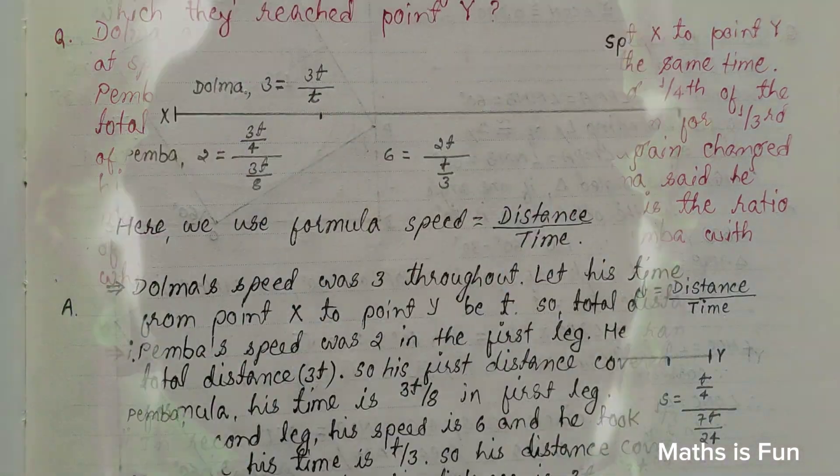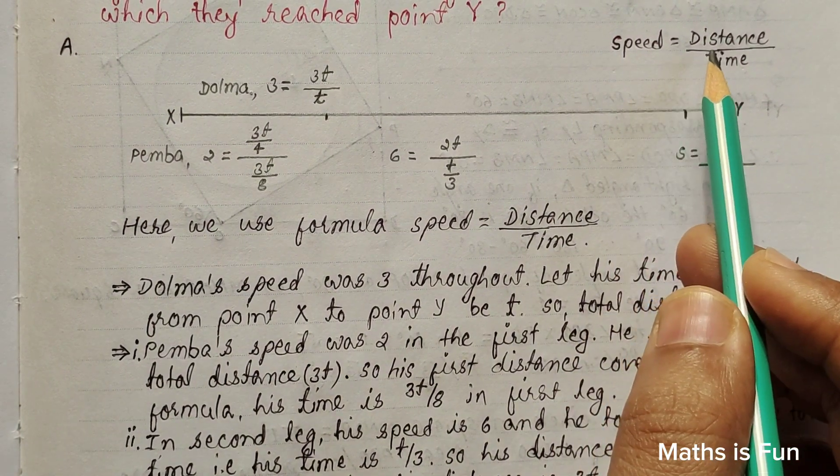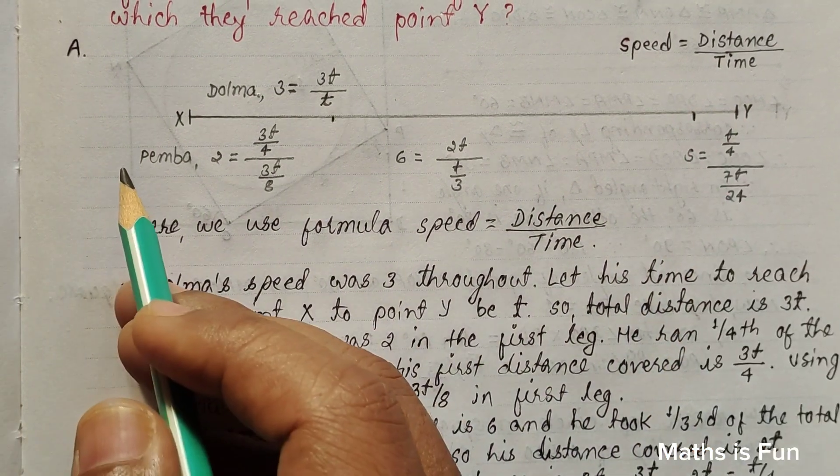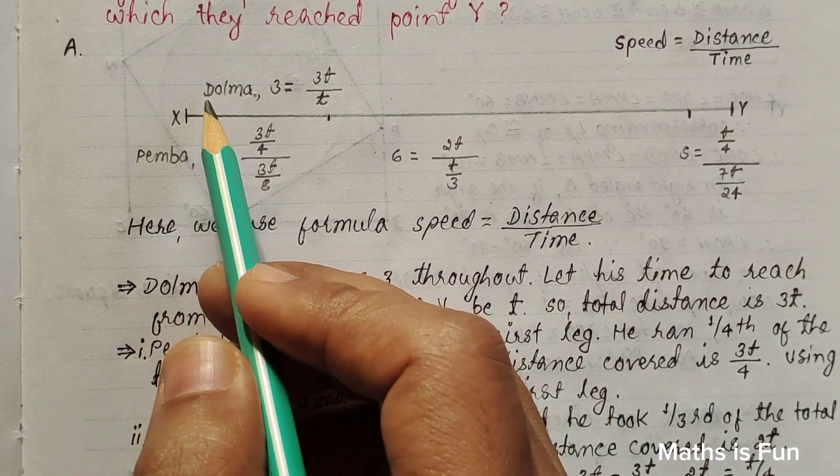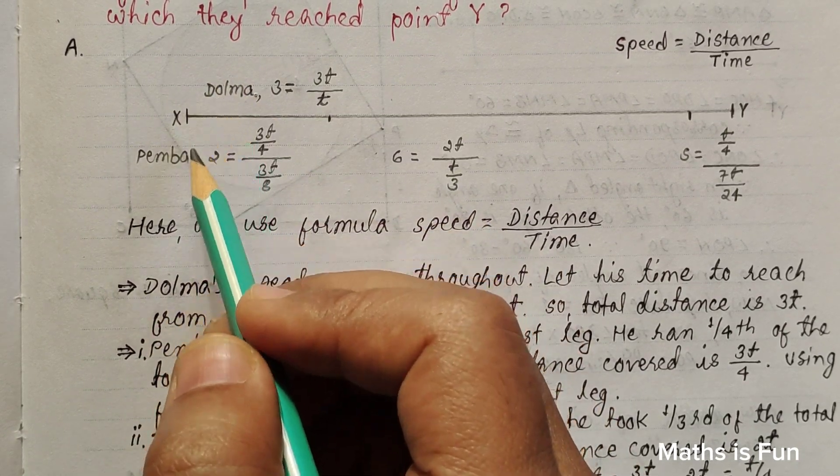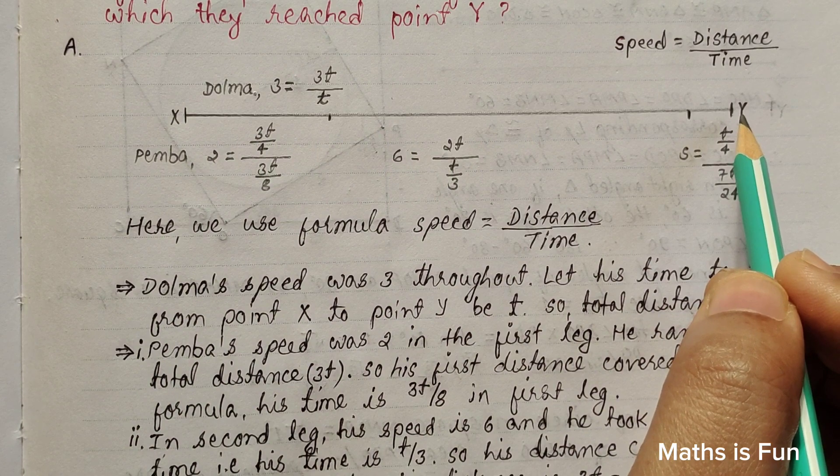Okay, the master formula for this question is speed equals distance over time. Now let's understand this question with the help of this drawing. In this drawing we can see that Dolma and Pemba start to run from point X and they reached point Y at the same time.